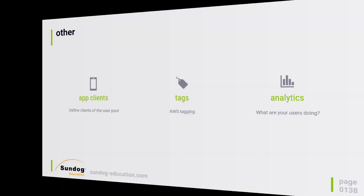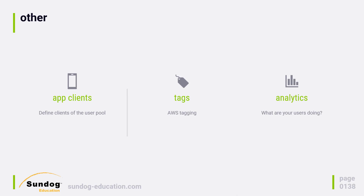There are a few other things that don't really fit into a good category. The first is app clients — we care about this because we'll need a client for our website. Next, we have tags, which we've seen in a lot of other places in AWS like DynamoDB, API Gateway, and Lambda. These are just convenient ways of grouping resources together. Last but not least, we have analytics, which is a way to really track your users. You can set up campaigns for your users, and this feature uses Pinpoint, which will probably cost you money as well.